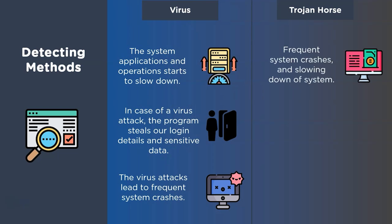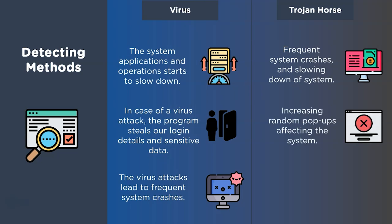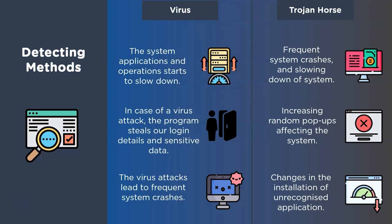For trojans: frequent system crashes and slow reaction time are signs of infection. There may also be more random pop-ups appearing from the system, which can indicate trojan activity. Additionally, modification of system applications and changes to the desktop appearance can be caused by a trojan program.